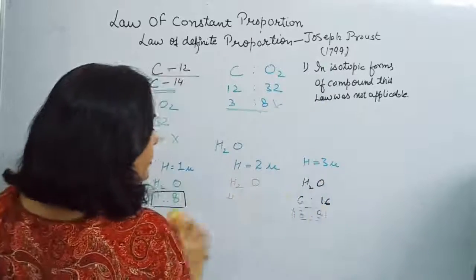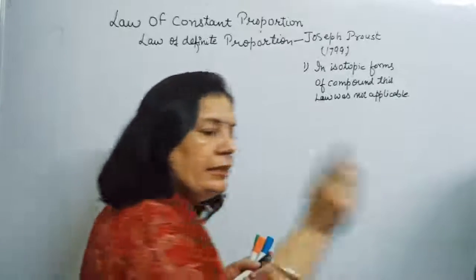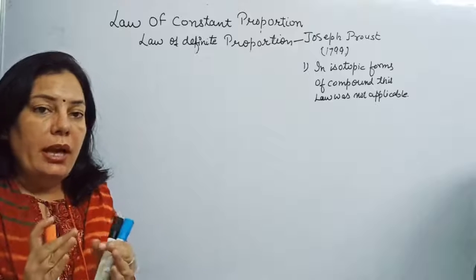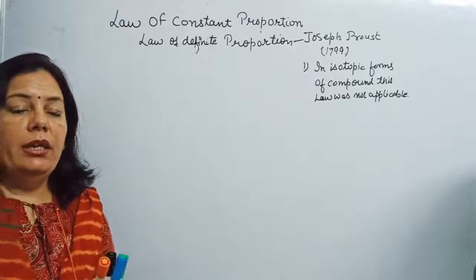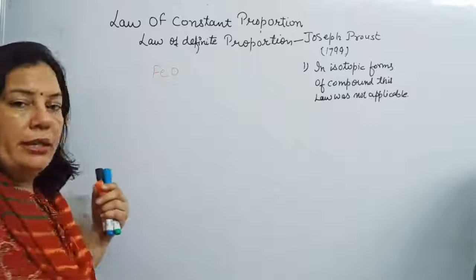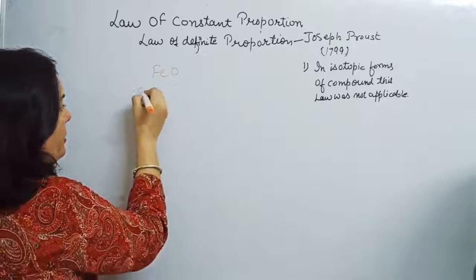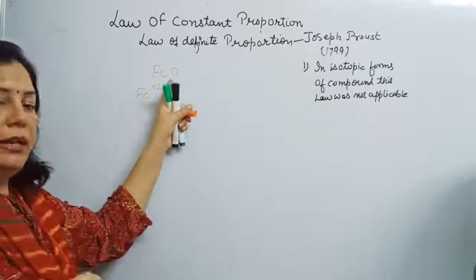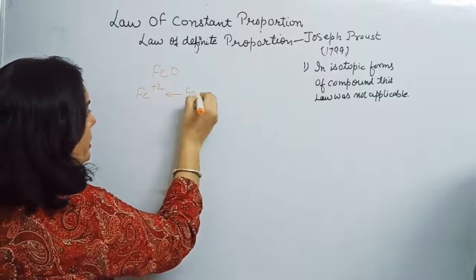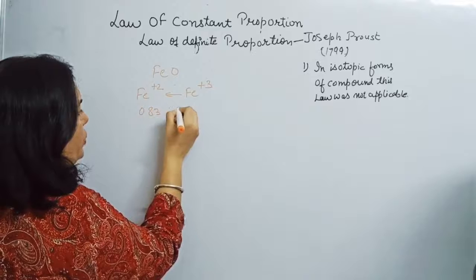The second limitation is related to non-stoichiometric compounds. For example, iron oxide (FeO), also called ferrous oxide, is an example of a non-stoichiometric compound. The ratio of iron and oxygen does not remain fixed because sometimes Fe2+ ions are replaced by Fe3+ ions. When this substitution occurs, the ratio becomes 0.83:0.95 instead of the expected 1:1.